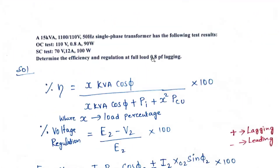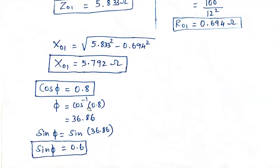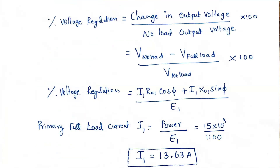cos φ is 0.8 as given, so φ equals cos⁻¹(0.8) = 36.86 degrees. We also calculate sin φ for the working and magnetizing components. sin φ = sin(36.86°) = 0.6.